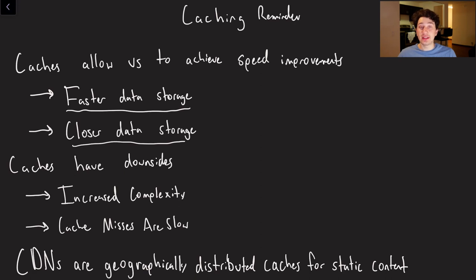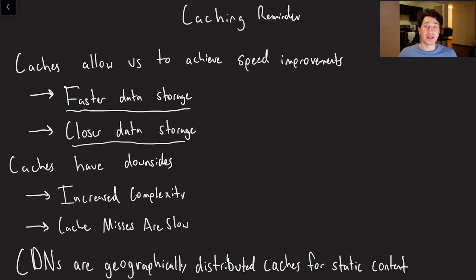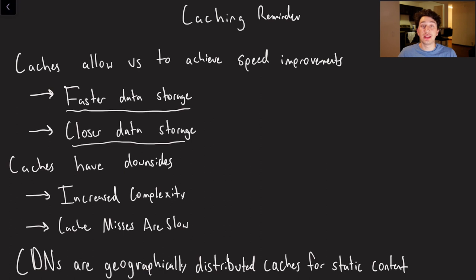Caches do have downsides to them — they're not just perfect. Mainly in the sense that the more components that we add to our system, the more complexity we have. We have to keep track of where everything is located in terms of the files. There will be more downtime of all of our CDN nodes. And of course, cache misses are slow. If I try to read from a CDN and the content's not there, it would have just been faster to go straight to the database wherever I was storing that static content originally.